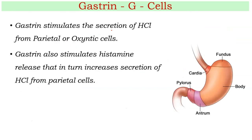Gastrin stimulates the secretion of HCl — that is its main function. HCl is synthesized from the parietal or oxyntic cells. Gastrin also stimulates histamine release, which in turn increases the secretion of HCl. So whether it is histamine or gastrin, both lead to the synthesis of HCl from the parietal cells.